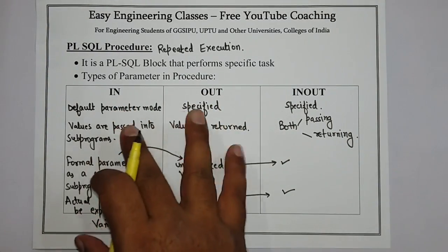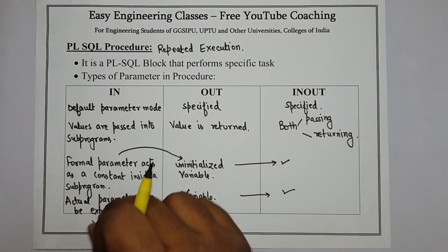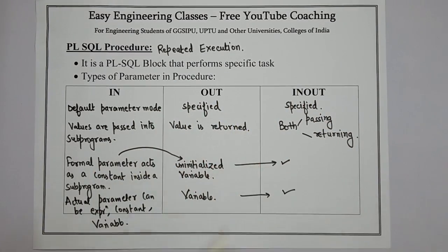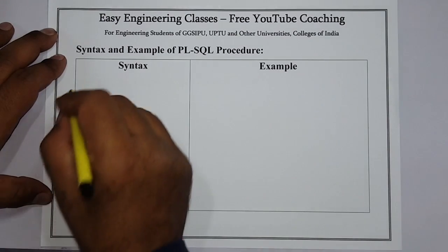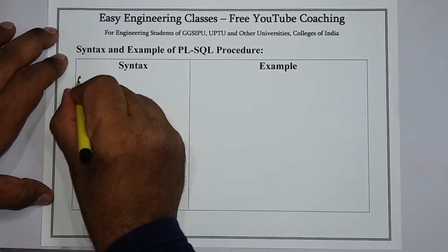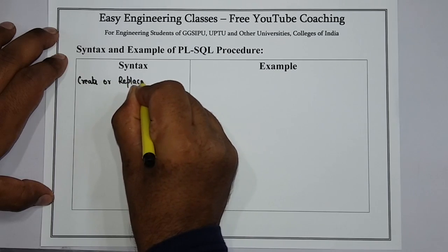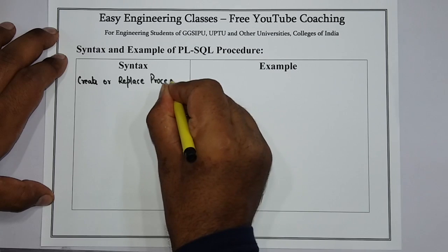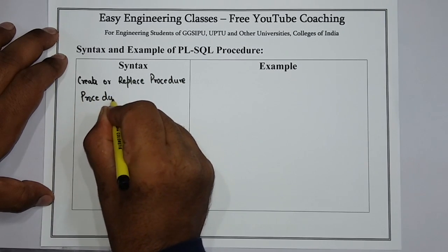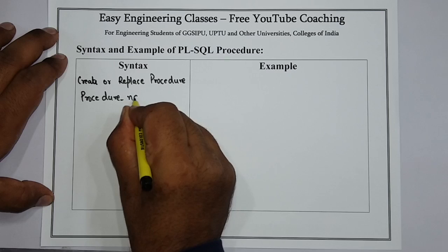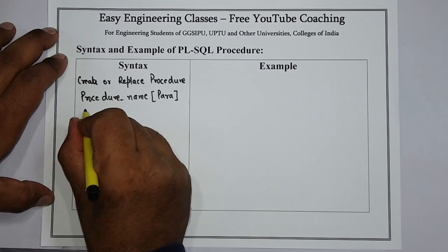So these are the three different types of parameters in a procedure: IN, OUT, and IN-OUT. We will see an example of each parameter to help clarify the concept further. Now let's see the syntax of a PL/SQL procedure. You have to write CREATE OR REPLACE PROCEDURE, then the name of the procedure, then the parameters, then IS, the body, and optionally an EXCEPTION section, then END with the procedure name.